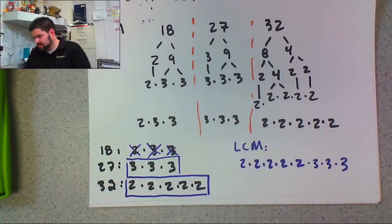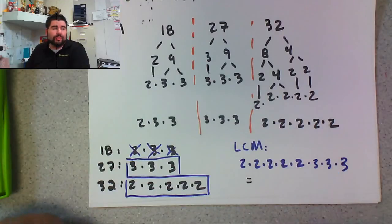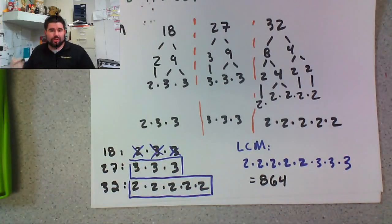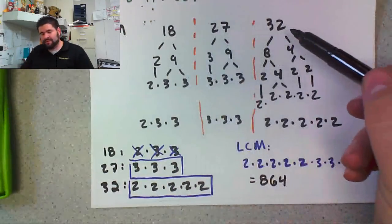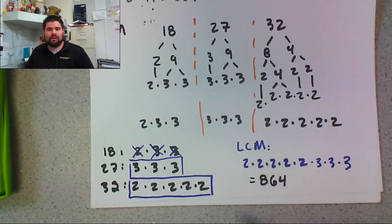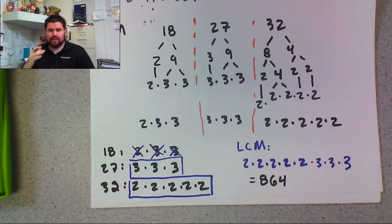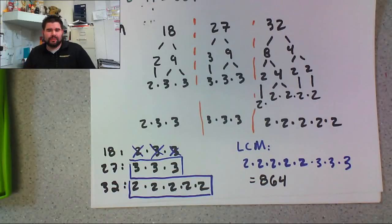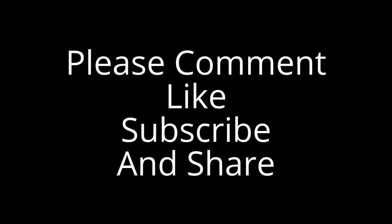Using the commutative property, I can multiply all those numbers any way I want, and what I end up with is 864. The lowest common multiple between 18, 27, and 32 — the lowest number that all three of these can share as a multiple — is 864. This has been Algebra 1 Lessons with Matt. Thank you for tuning in. If you have any questions, please leave a comment below, share the video, and have a good day.